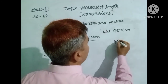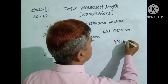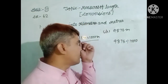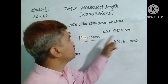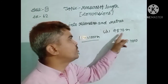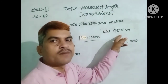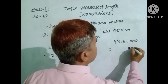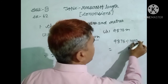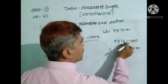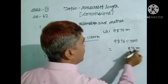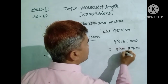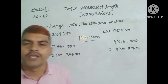Now 9876 divided by 1000. We do not divide by 100 here — we divide by 1000 because 1000 meters equals 1 kilometer, to change into kilometers. From the right side, 3 digits are the remainder: 876 meters. The rest is the quotient: 9 kilometers. So the answer is 9 kilometers and 876 meters.